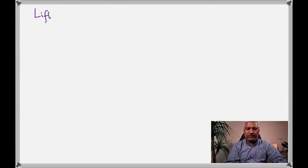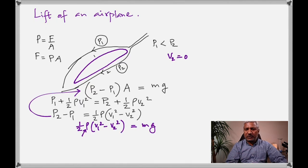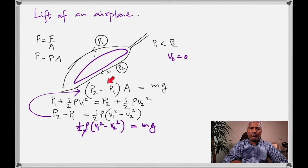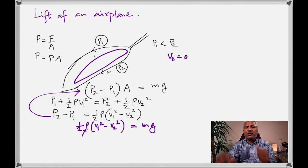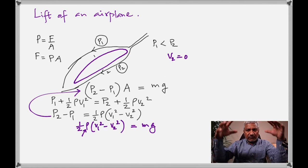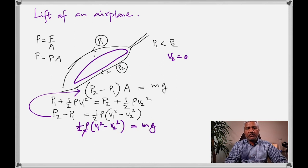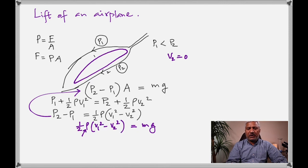In the calculation, p₂ (pressure below) is greater than p₁ (pressure above). The difference in pressure times wing area gives the lift force, which equals the weight of the entire aircraft. Using Bernoulli's principle, p₂ − p₁ = ½ρ(v₁² − v₂²), and setting this times area equal to mg gives the relationship for flight.